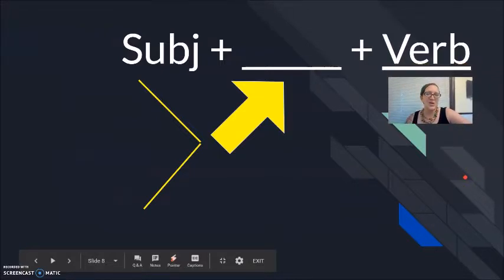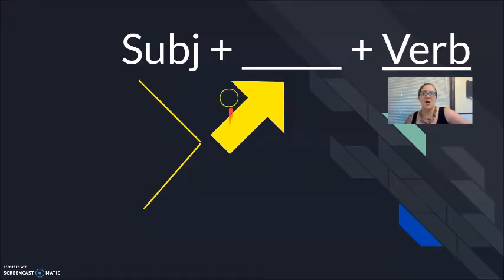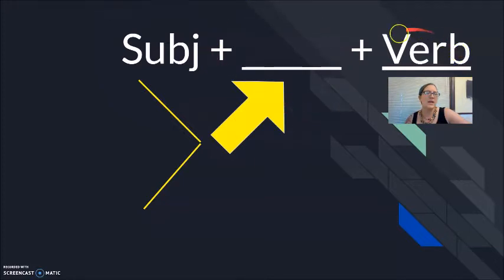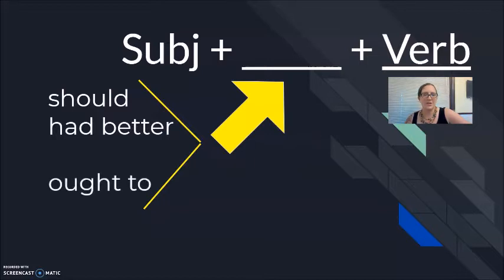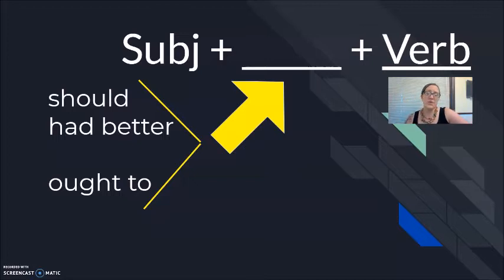Finishing up with this quick review of modals of advice: remember all of them follow the format of subject, modal, and infinitive or unchanged verb. We're putting into that modal position things like should, had better, and ought to. These are used in the present or in the future. When we want to take these sentences into the past, we have to think about them with the perfect tense, and I'll put together a video explaining that more in depth in the future.